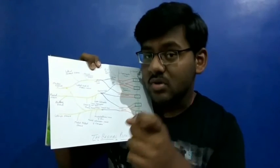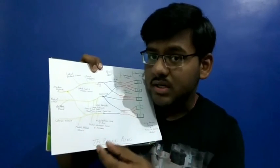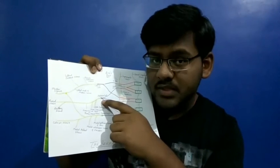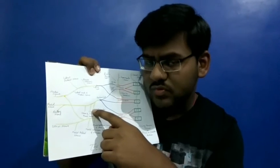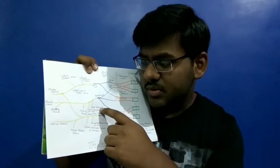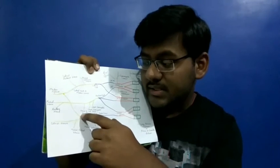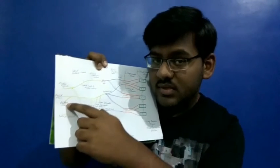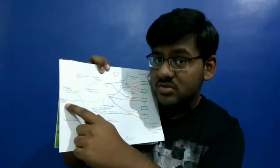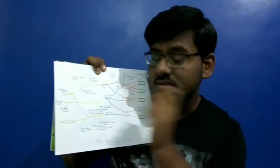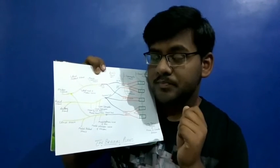The word 'ULNAR' is itself a mnemonic for the branches of the posterior cord. U for upper subscapular, L for lower subscapular, N for nerve to latissimus dorsi which is also called the thoracodorsal nerve, A for axillary nerve, and R for radial nerve. The radial nerve is the largest branch of the brachial plexus. Radial nerve and axillary nerve are two important branches of the posterior cord.